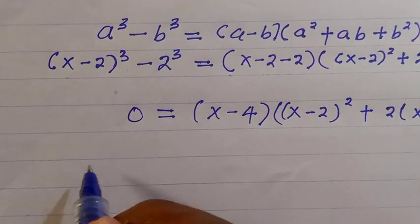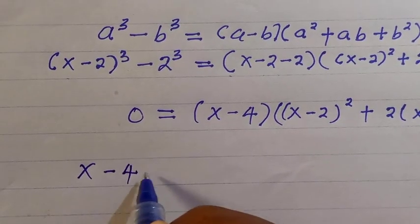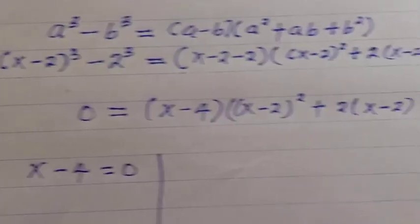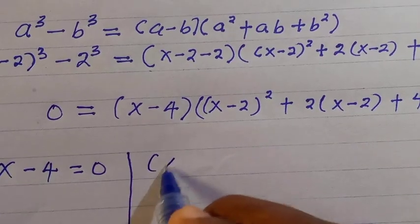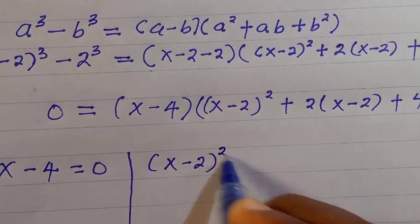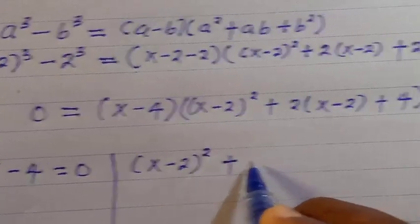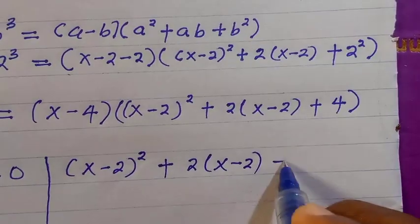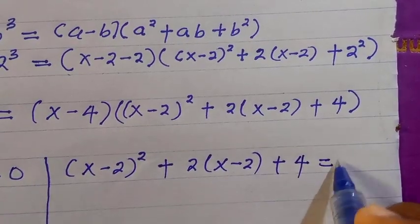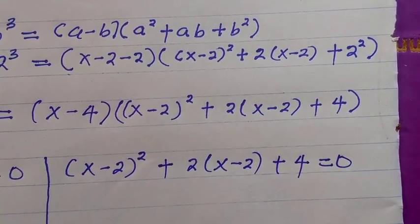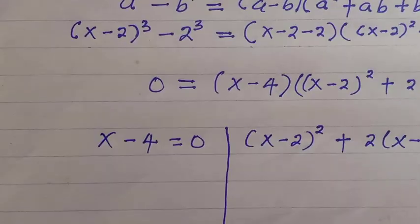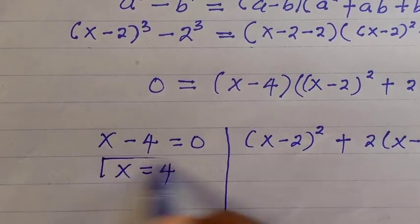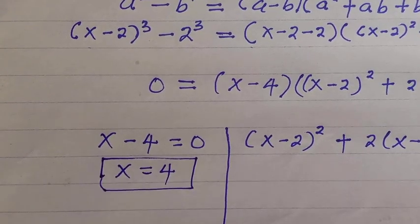For the first factor, x minus 4 equals 0 gives x equals 4, which is the first solution. For the second factor, we have x minus 2 squared plus 2 times x minus 2 plus 4 equals 0.